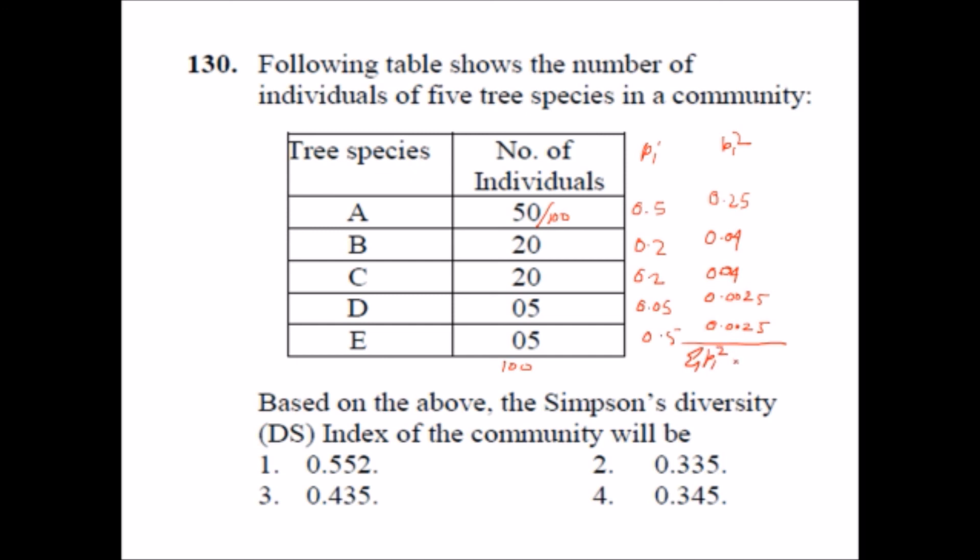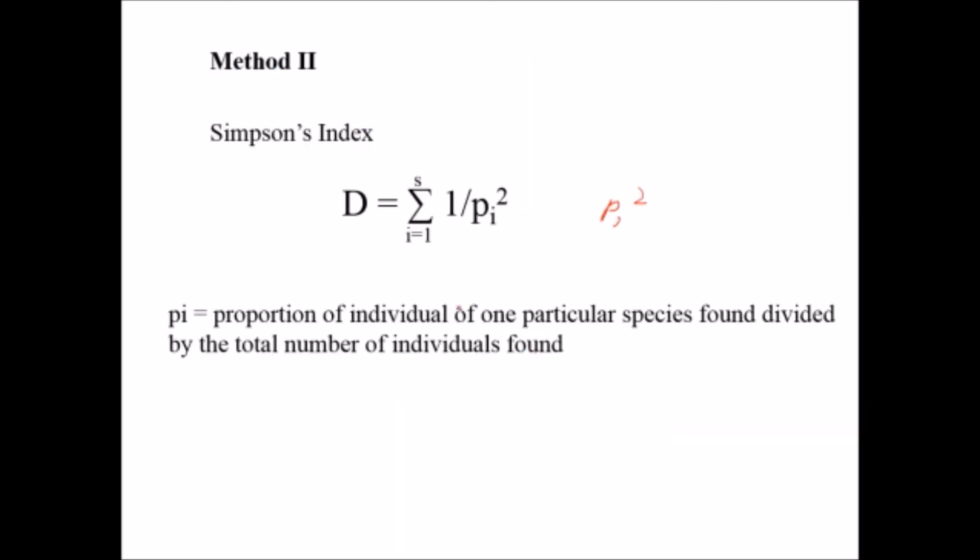We will get exactly the value 0.335 which is number two. Both the formulas are right but I found this formula which I have discussed here, one which is one by pi square for the Simpson's index and simply pi square for the Simpson's diversity index.